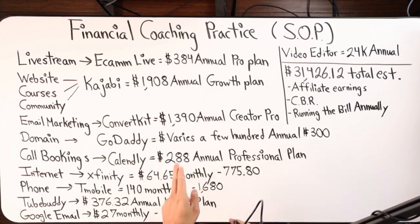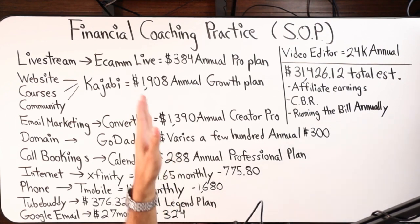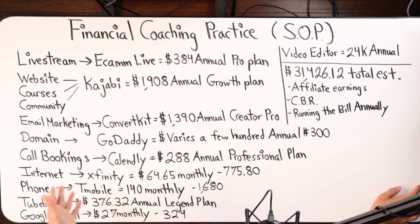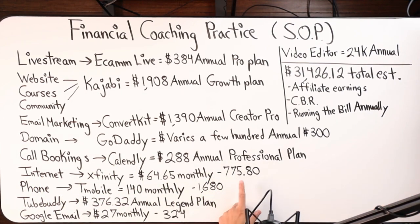I pay $288 for the professional booking plan annually — and I'm paying nearly everything annually. Phone and internet will vary, but you need both. I use T-Mobile and Xfinity. Xfinity costs me roughly $775–780 per year. I have two phones on T-Mobile at $140 per month, so that's $1,680 a year.